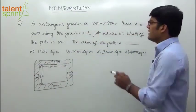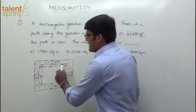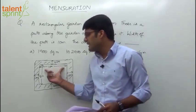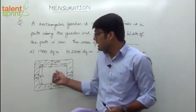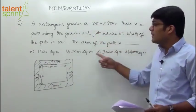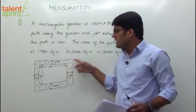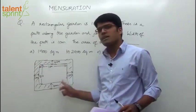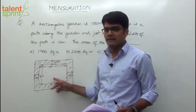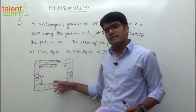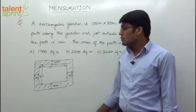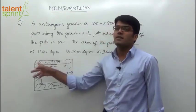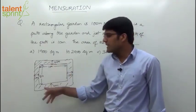Now how do you get that? You know the length and the breadth of the inner rectangle. This is like a rectangle inside a rectangle. Length is 100 and the breadth is 80. To find the area of this path, we need the area of the outer rectangle and area of the inner rectangle. Outer rectangle minus inner rectangle will give us the area of the shaded region.